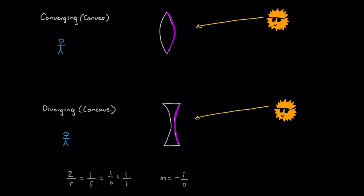The diverging lenses will take that light and bend it out, whereas converging lenses will bend it in.